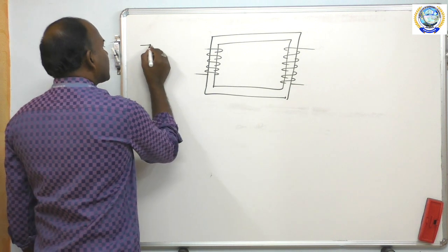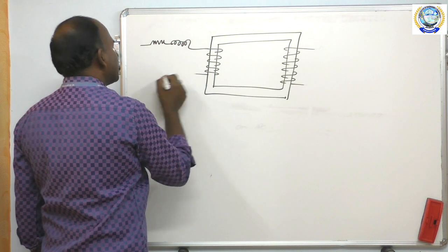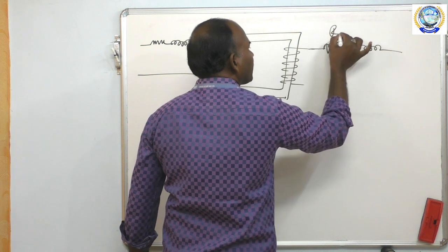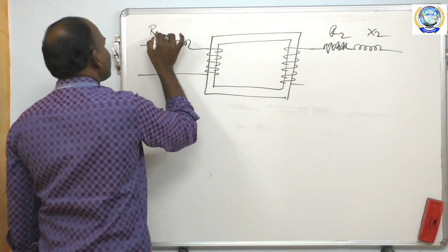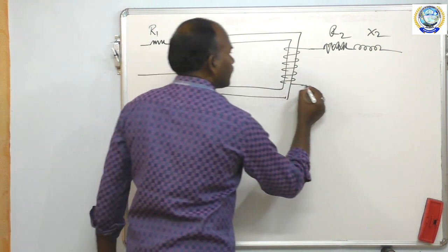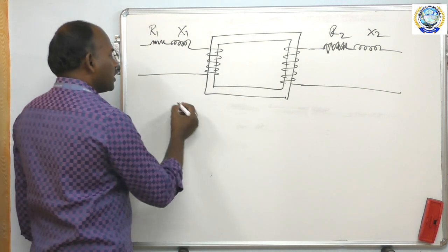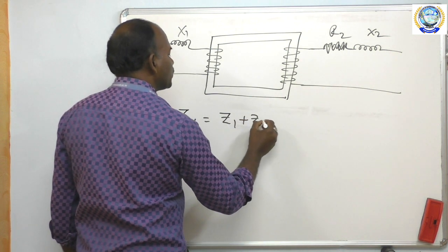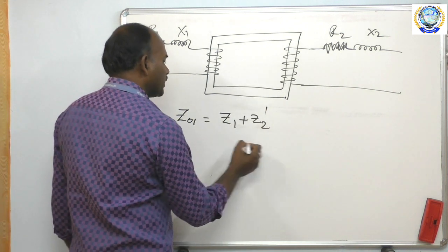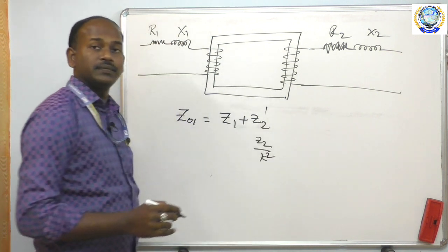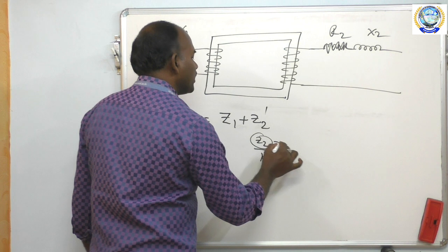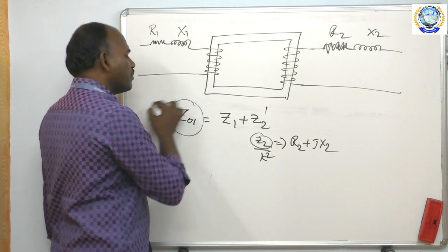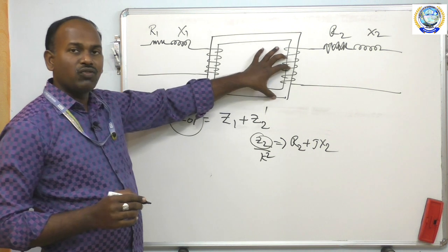In the same manner, you will consider the resistance along with the inductance. You get Z01, which is Z1 plus Z2 dash. Z2 dash is nothing but Z2 divided by K square, where Z2 is R2 plus jX2. This gives you the total impedance value of the transformer referred to one side.